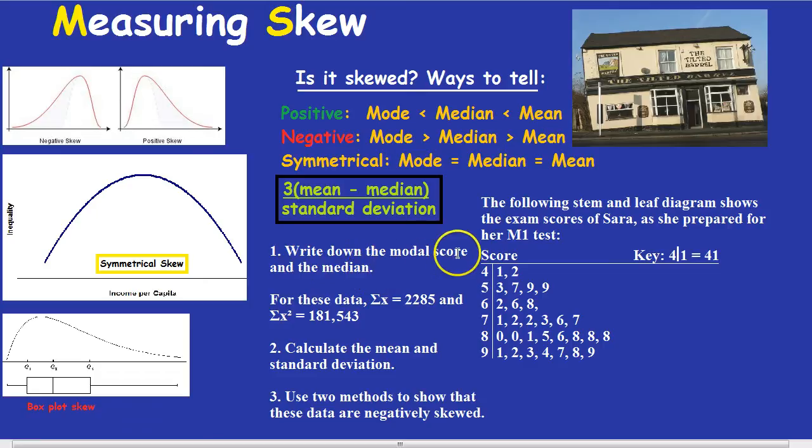Write down the modal score and the median. Well, the modal score is the score that comes up the most often. So which score of Sarah did she get the most often? It was 88%, or 88 marks, because that came up three times, and the others only came up twice, for example 59. That's the modal score, 88. What about the median? Well, if you count this, you'll see that there's 30 scores. And whenever it's an even number, you've got to be very careful when working out the median. Most people get 30, they divide it by 2, and then they look for the 15th score, and they say, that's the median.